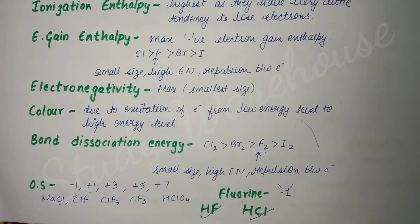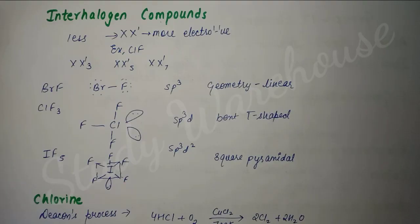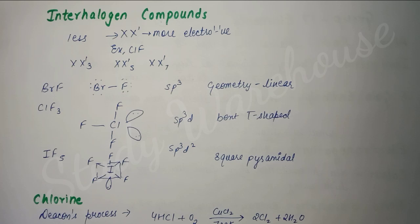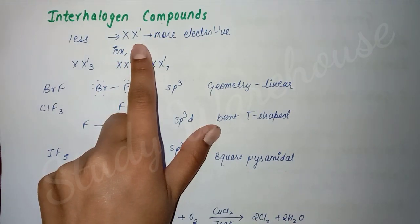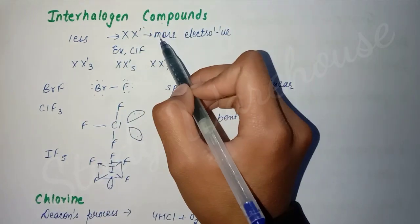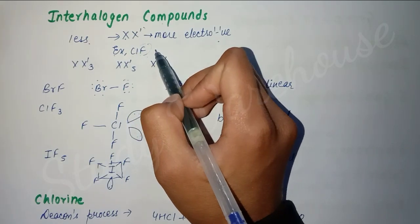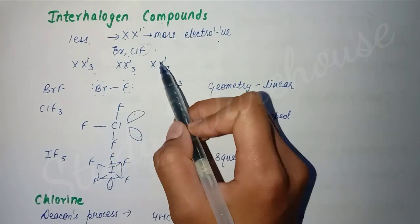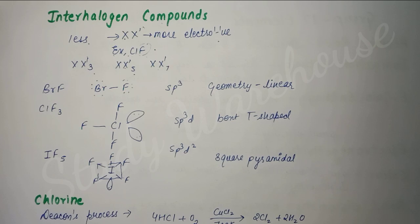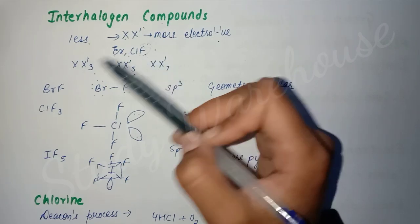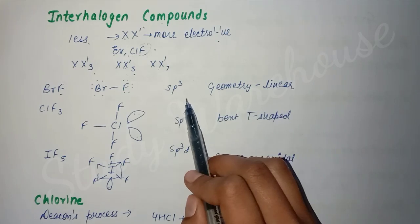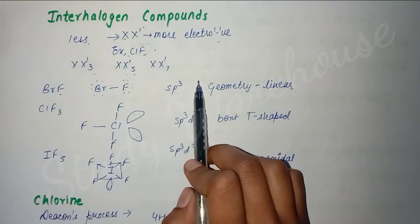Now we have interhalogen compounds. These are compounds where halogens react with each other, like ClF or ClF3 - there are two halogens, so such compounds formed by combination of two halogens are called interhalogen compounds. First, if we talk about XX', there can be many types. X' which is written later is the more electronegative element, and X written first is less electronegative. For example, in ClF, fluorine is more electronegative so we write it on this side. Similarly, they can exist as XX'3, XX'5, and XX'7. For XX', the example is ClF or BrF. Its structure is like this and the geometry is linear, with sp3 hybridization.